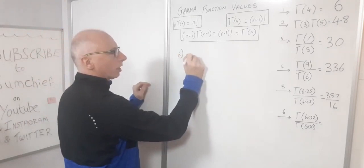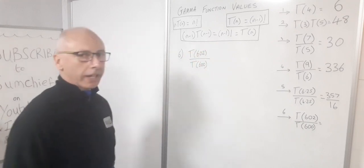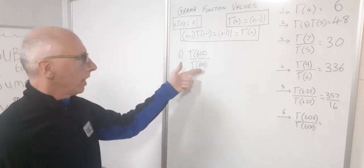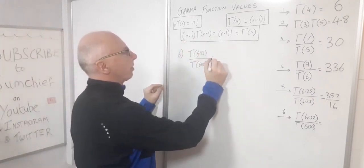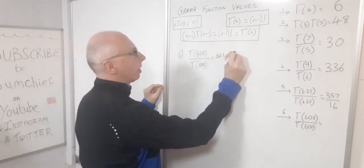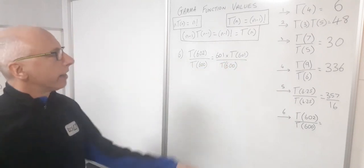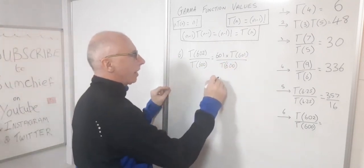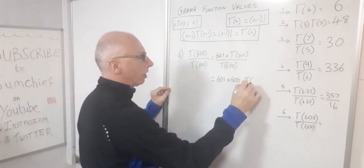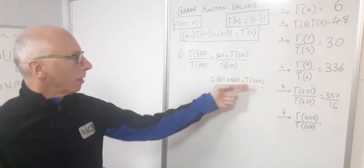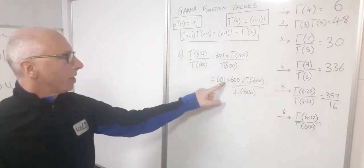Question 6: gamma(602) divided by gamma(600). Working out 600 factorial is impossible directly, so I'll use the recursive property. Gamma(602) = 601 times gamma(601). Applying the property again: 601 times 600 times gamma(600), divided by gamma(600). The gamma(600) terms cancel, leaving 601 times 600.